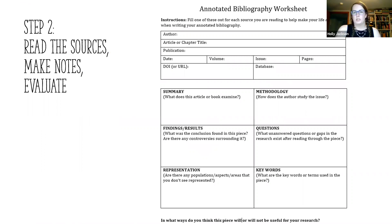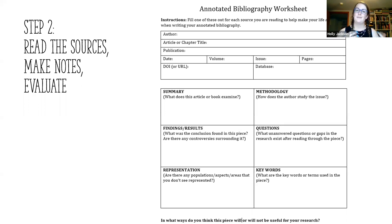There is a worksheet available on the research guide at lib.mansfield.edu/research-tips. You'll find the annotated bibliography worksheet there and can print it off or save it to your computer. It covers all the basics: your author, article or chapter title, publication, date, database where you found it — everything you need to write your citation — plus areas to help with your annotation and even a potential literature review.